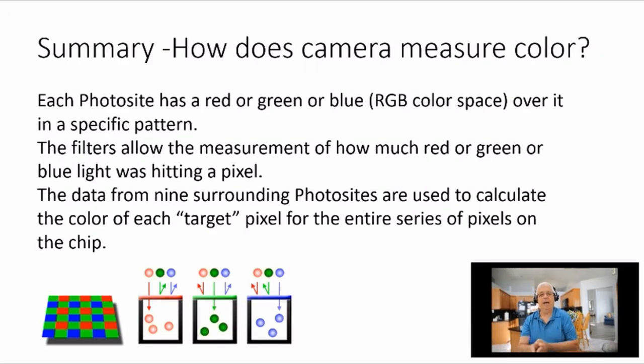In summary, how does the camera measure color? The photosite itself is only measuring intensity of light. So they put a red or a green or a blue filter over it. That's why we get the term RGB color space—red, green, blue color space. And they put it over it in a specific pattern that, of course, the computer knows the pattern. And the filters allow measurement of how much red or green or blue light is hitting a pixel.